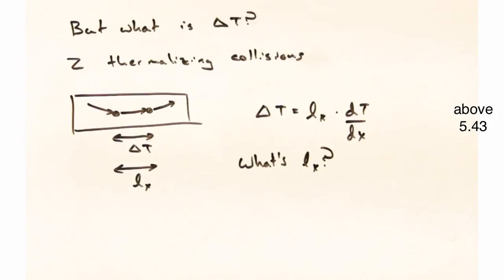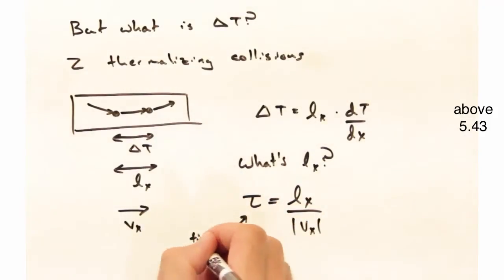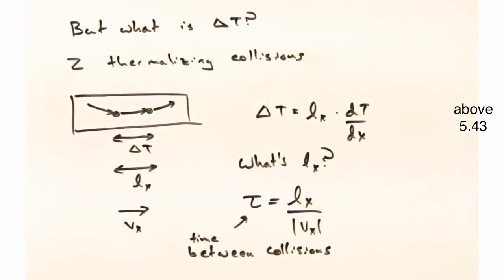Additionally, there must be some l sub x associated with these two points, and so we can then write delta t in terms of this l sub x, as well as the temperature gradient. It's also nice to recast l sub x in terms of the velocity in the x direction, and this tau, which denotes the time between collisions.